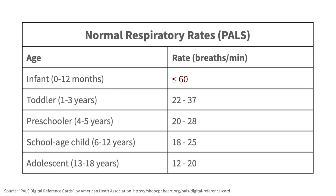Toddlers should not have a respiratory rate above 40. Preschoolers should not have a respiratory rate above 30. School-aged children should not have a respiratory rate above 25. And adolescents should not have a respiratory rate above 20. Note that there is some variation between these ranges and the International Pediatrics guidelines. As a general rule, as children grow in age, the upper limit of normal for respiratory rate decreases.